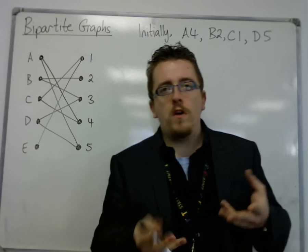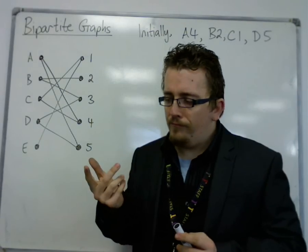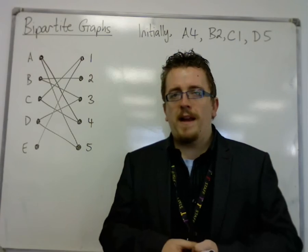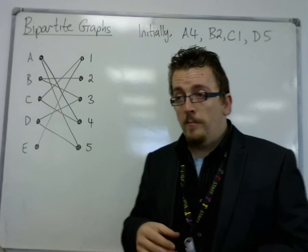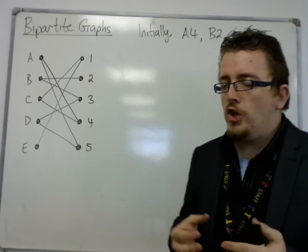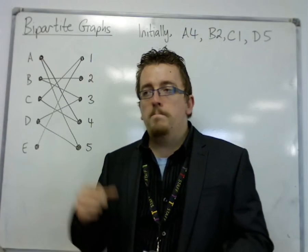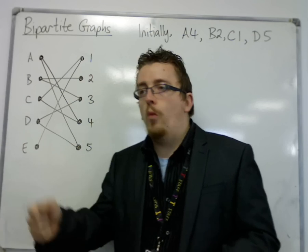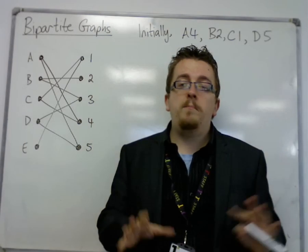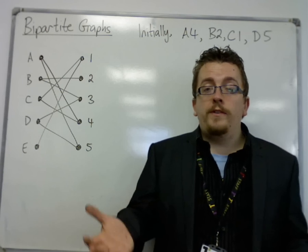With bipartite graphs, you're not always going to be able to find a complete matching. By complete matching, I mean we are in a situation where we've been able to get our five employees, each one of them matched to one of the five tasks. If that is the case, perfect, we have a complete matching. But that isn't always the case.